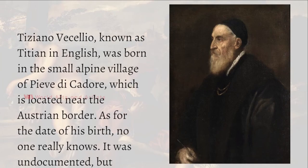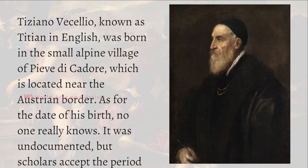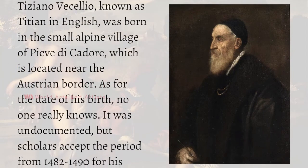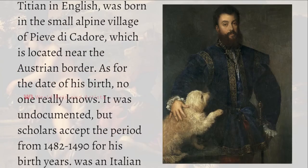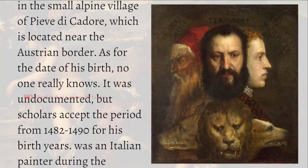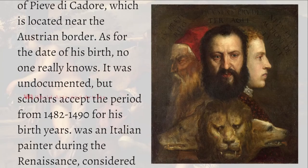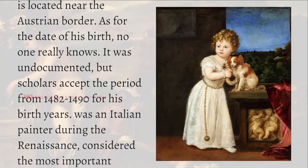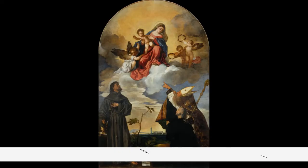Tiziano Vecellio, known as Titian in English, was born in the small alpine village of Pieve di Cadore, located near the Austrian border. As for the date of his birth, no one really knows. It was undocumented, but scholars accept the period from 1482 to 1490 as his birth year.